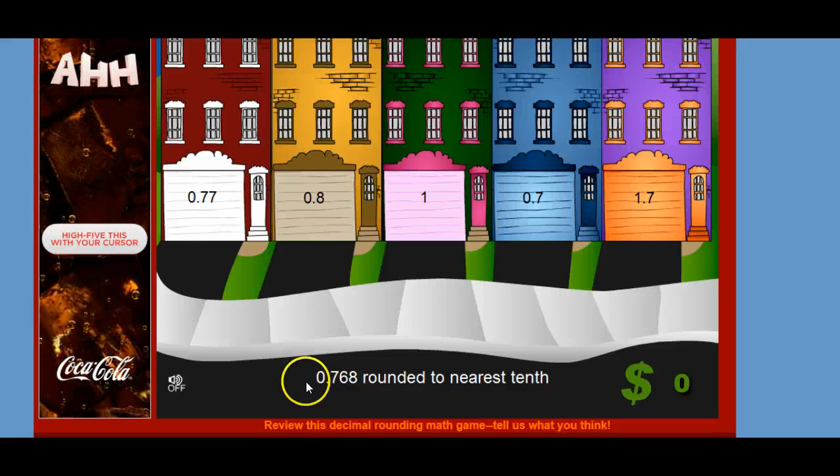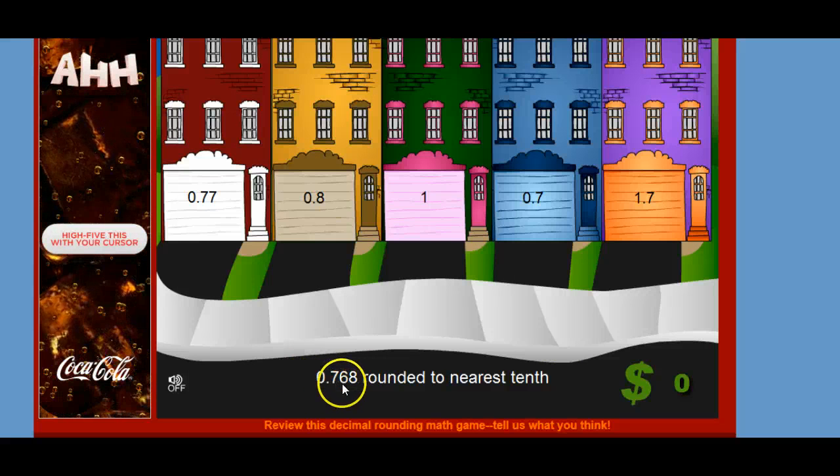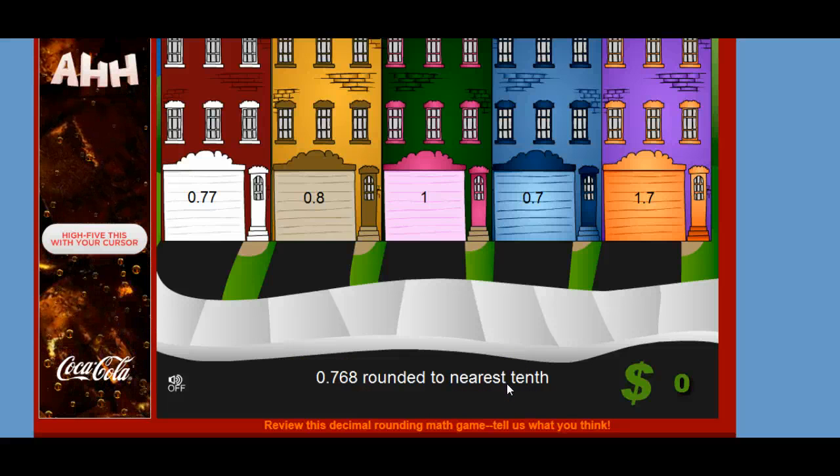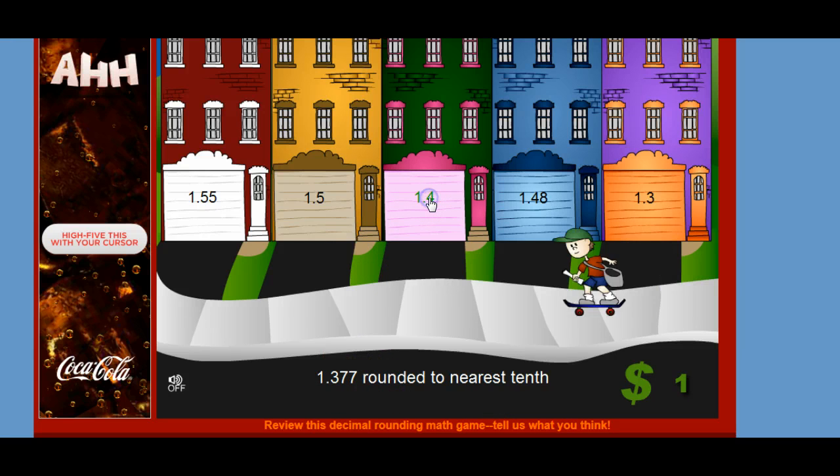So again, they're rounding the decimals. Here is the number and it says rounding to the nearest tenth, and then you need to choose the house that has the correct amount so he can earn money. He didn't round that correctly, so he didn't earn money. So this one rounded to the nearest tenth, so we'll put 0.4. There you go. Jimmy makes a dollar.